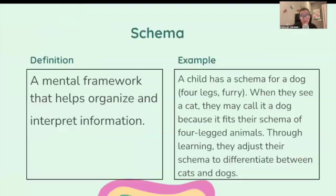Let's start with schema. We've seen this word before — you probably already have a flashcard for this from Unit 1. Schema is a mental framework that helps organize and interpret information. An example: a child has a schema for a dog — four legs, furry. When they see a cat, they may call it a dog because it fits their schema of a four-legged animal. Through learning, they adjust their schema to differentiate between cats and dogs.